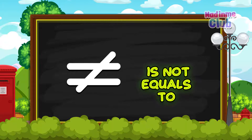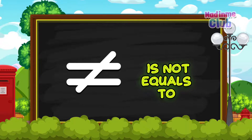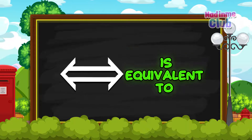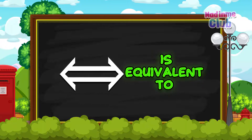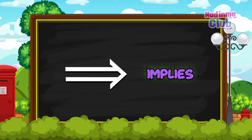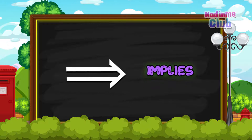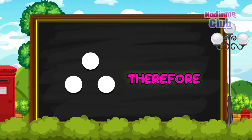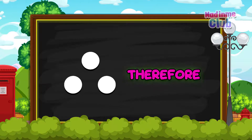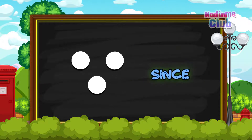Is not equals to — E-I-E-I-O. Is equivalent to. Imply — Old MacDonald had a farm, E-I-E-I-O. Therefore. Since.